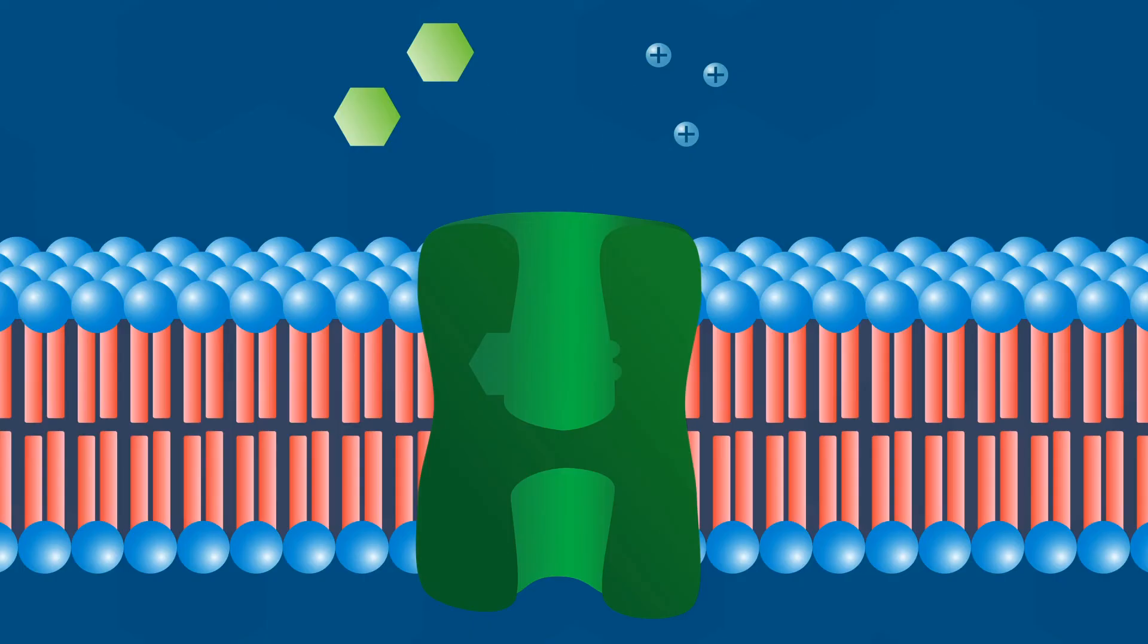One such transporter uses a sodium gradient to move glucose molecules into the cell, as shown here. A glucose molecule and some sodium ions are moved together from the outside of the cell to the inside. You will see various types of transport proteins during your time here in Biology 112, along with some examples.